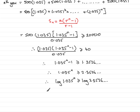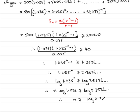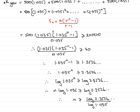Using the power rule for logs, we bring the power to the front: n times log(1.035) is greater than or equal to log(2.3526). Dividing both sides by log(1.035) gives n is greater than or equal to log(2.3526) divided by log(1.035). Evaluating on a calculator gives n is greater than or equal to 24.869.